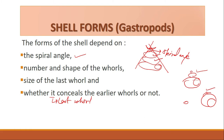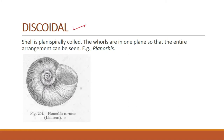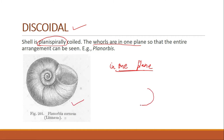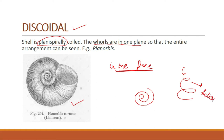The first shell form is discoidal. Here the shell is planispirally coiled, meaning the entire coiling is in one plane. The whorls are arranged in one plane so the entire arrangement can be seen. The example is Planorbis. You can see that the whole coiling is on one plane. This type of coiling in one plane is known as planispiral, whereas coiling that rises upward is known as helicoid.